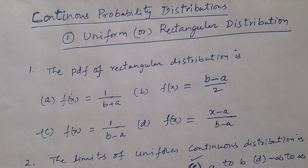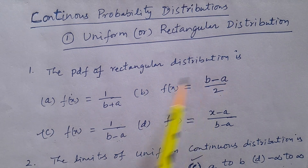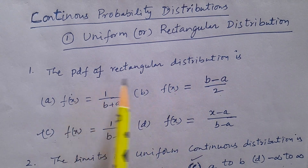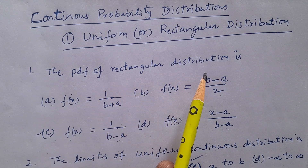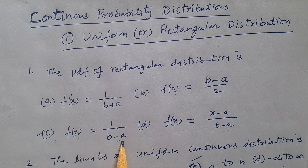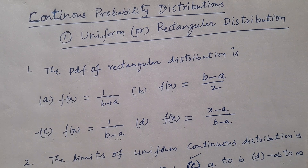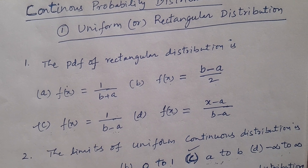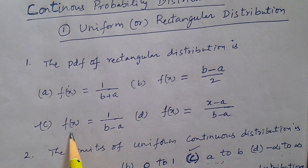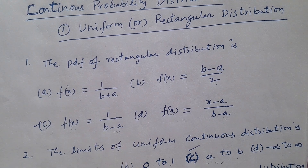The probability density function of Rectangular Distribution — from the 4 options, the correct answer is C: f(x) = 1/(b-a).